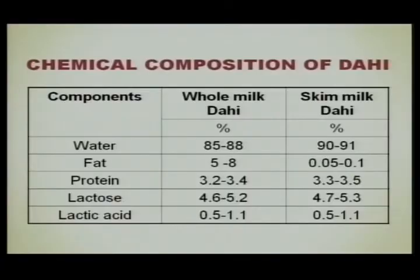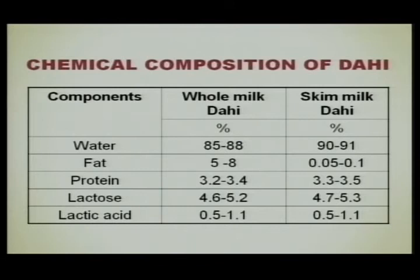The chemical composition of whole milk dahi shows water content around 85–88%, fat 5–8%, protein 3.2–3.4%, lactose 4.6–5.2%, and lactic acid 0.5–1.1%. Around 10–15% of the lactose present in milk is converted into lactic acid. Skim milk dahi has fat 0.05–0.1%, protein 3.3–3.5%, lactose 4.7–5.3%, and lactic acid 0.5–1.5%.